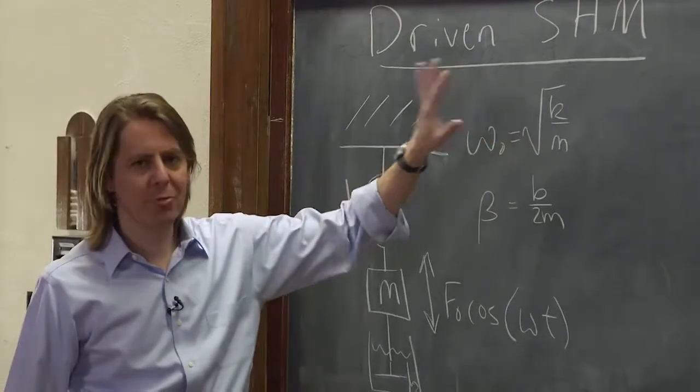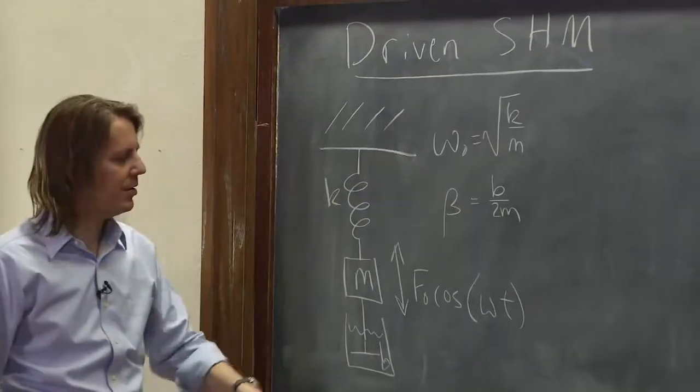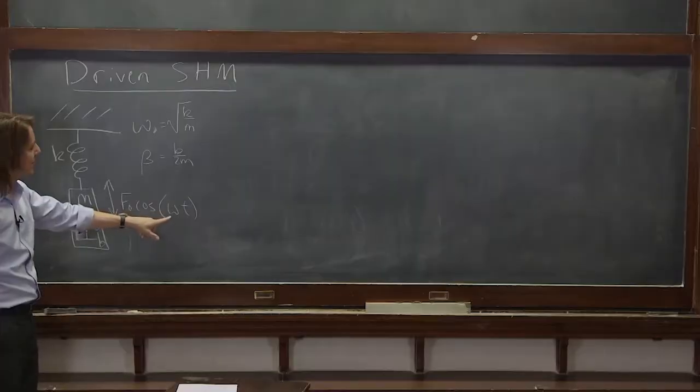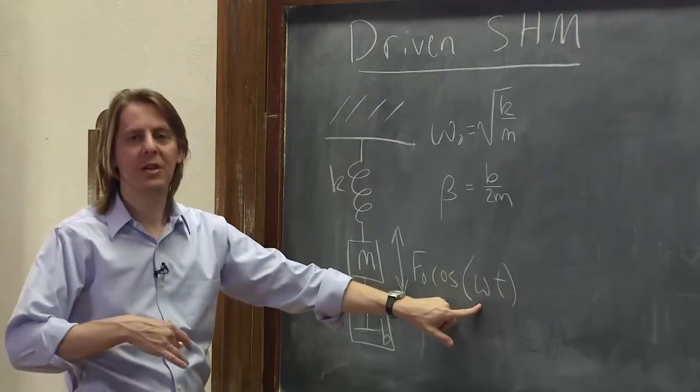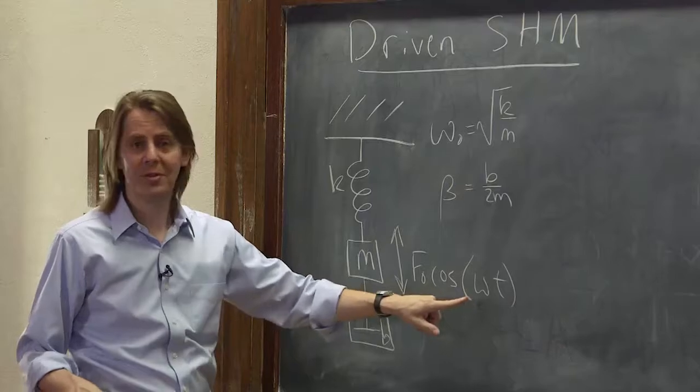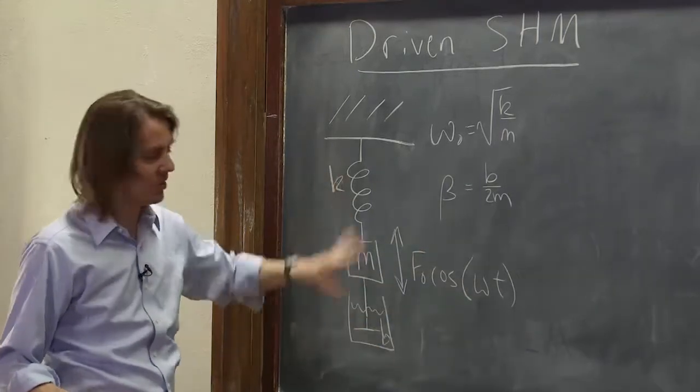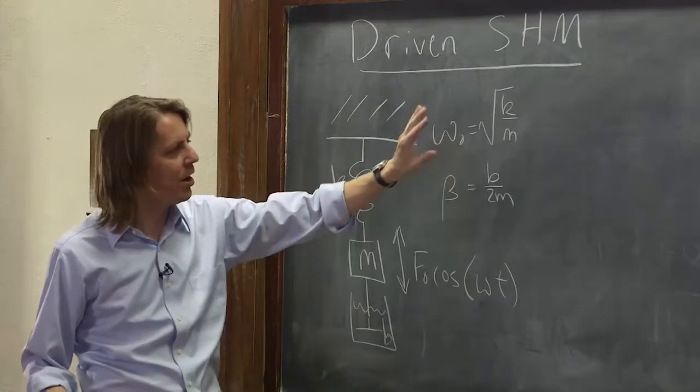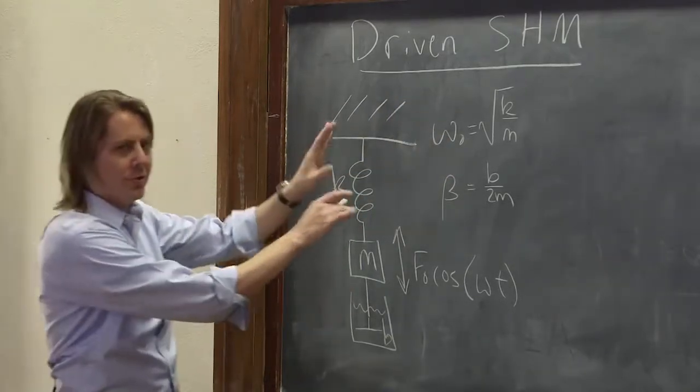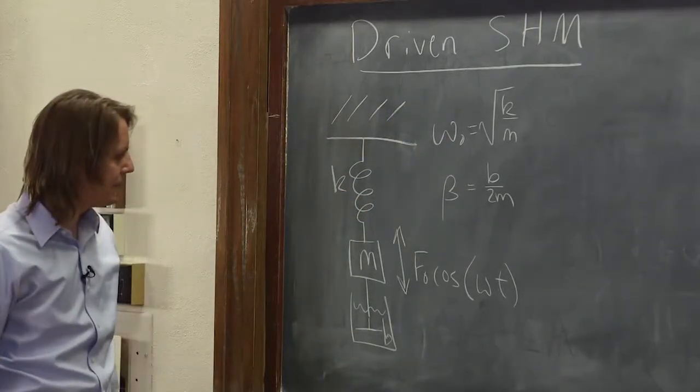So this omega naught is just a property of the system. It's a combination of k and m. This omega is also a property of the system. It's the drive frequency. We're telling it to you ahead of time. We're not looking for this omega. We're telling you what it is. We're pushing this thing at omega. That's why we distinguish omega with a naught. It means a natural frequency. So we have two frequencies we're dealing with already.